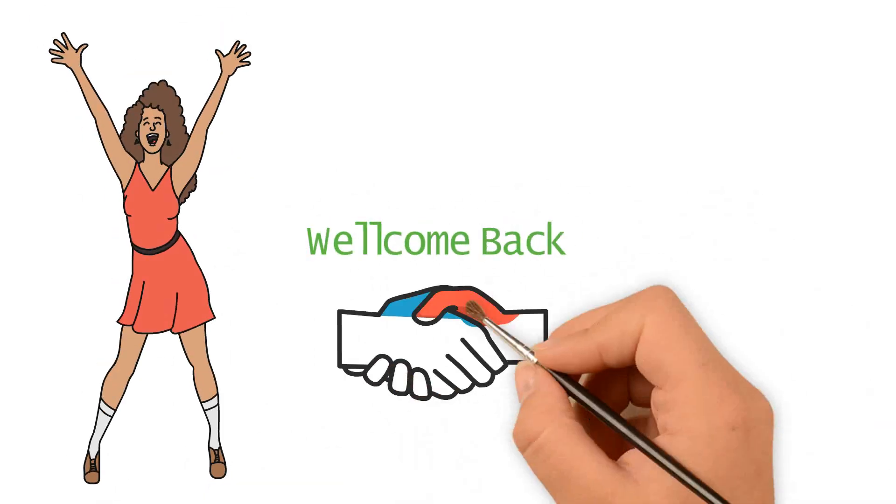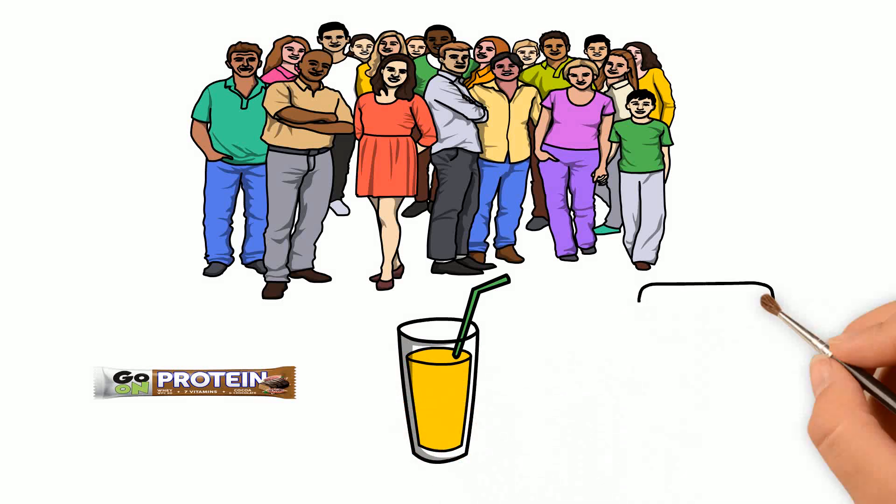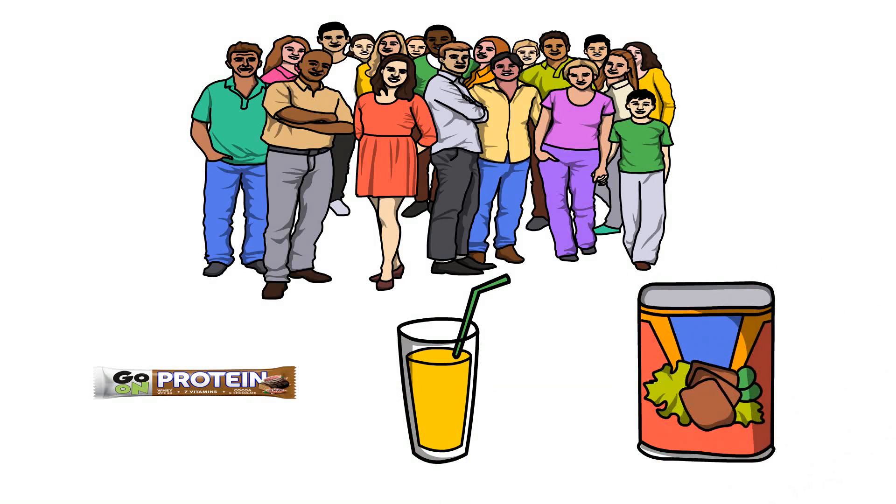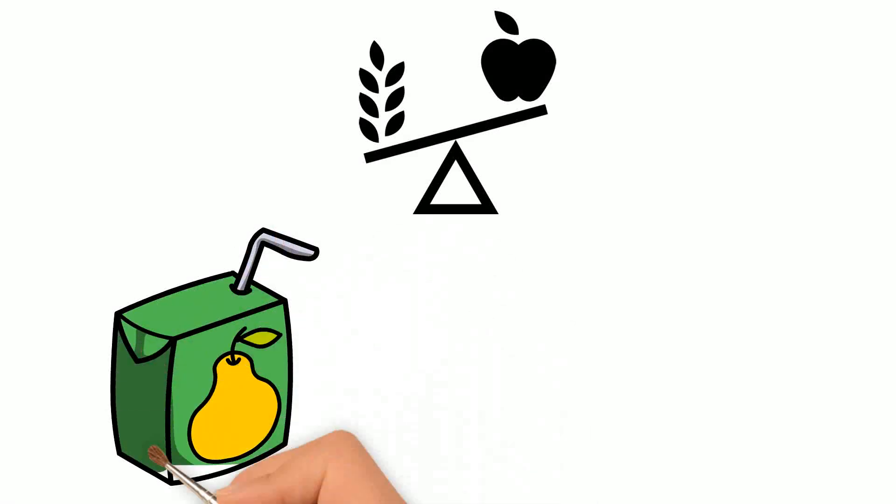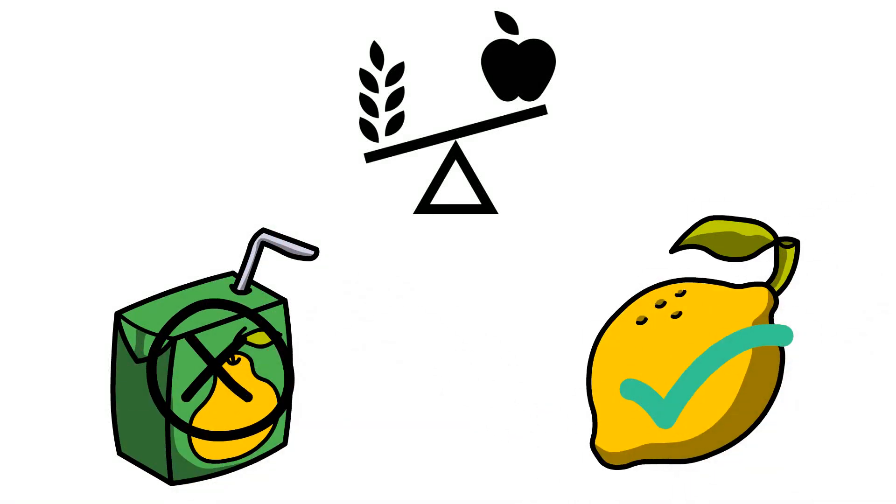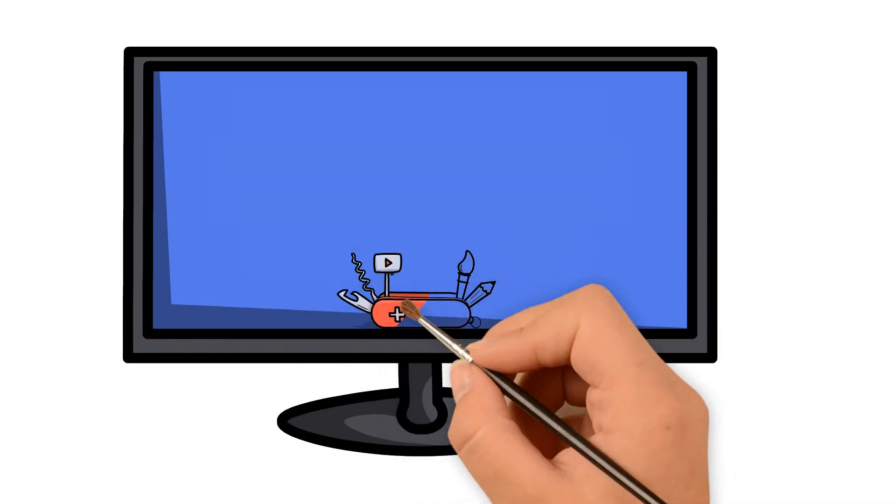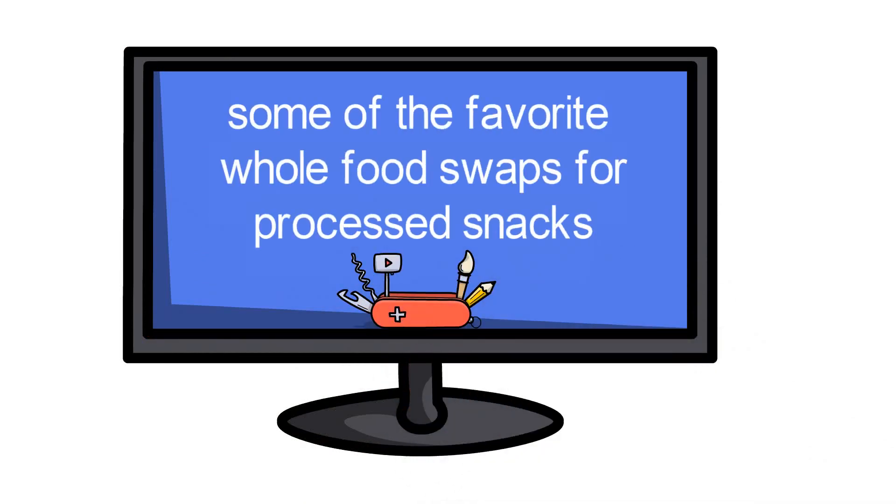Hello friends! Welcome back! Lots of people eat protein bars, protein shakes, and other processed food out of convenience. But one of the simplest ways to improve your nutrition is to swap these processed foods for whole food alternatives. In this video, we are looking to share some of the favorite whole food swaps for processed snacks.